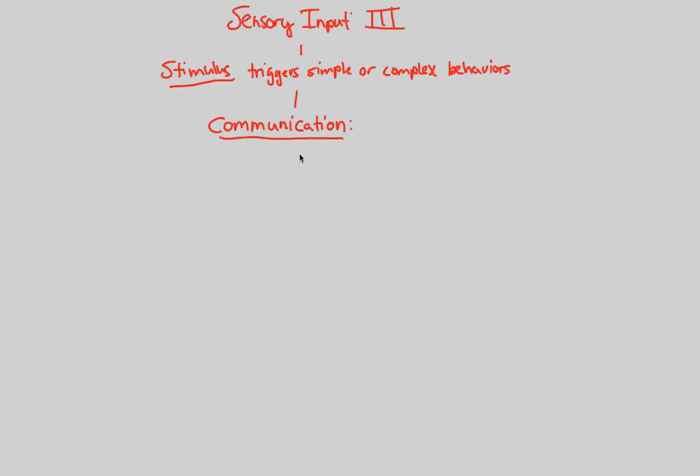So animal communication is all about the following. We'll quickly define communication between animals as the transmission, and transmission is useless unless there is a reception. The transmission and reception of mutually recognizable signals.